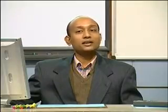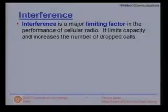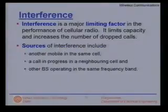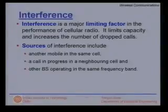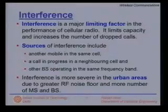Today we will focus on interference — how to calculate it, and what effect it has on designing cellular wireless communication systems. Interference is a major limiting factor in performance: it limits capacity and increases the number of dropped calls, and has a direct correlation with quality of service. Sources of interference include another mobile in the same cell, a call in progress in a neighboring cell, and other base stations operating in the same frequency band.